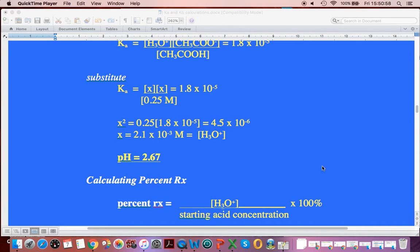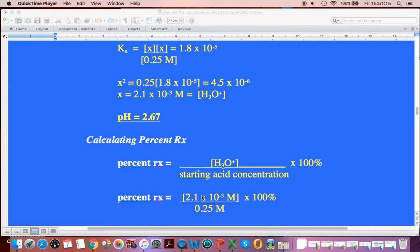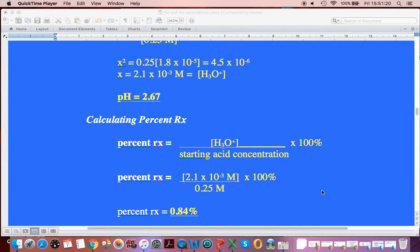Now, if we want to do it as a percent reaction, that becomes very easy as well. We just look at the H3O+ that we ended up with, this number here, and we compare it to the concentration of acid we started with, the 0.25, and we multiply by 100% to make it a percent. So we go, what we calculated, divided by our starting concentration. And so it has a 0.84%, less than 1% of the molecules of that acid are going to ionize. So that's what we're saying there.